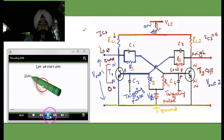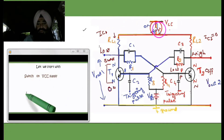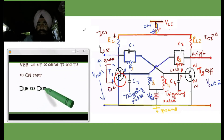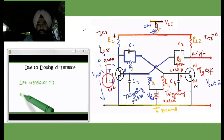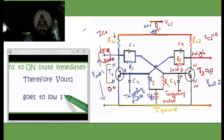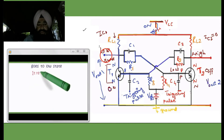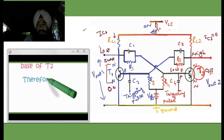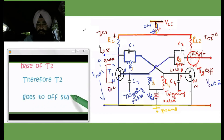The working of the bi-stable multivibrator. We switch on the VCC supply. VBB will try to drive T1 and T2 to the ON state. Due to component differences, let transistor T1 turn ON first — so collector to emitter gets shorted and VOUT1 goes to the low state. The potential here becomes low, which results in a lowering potential on the base of T2.